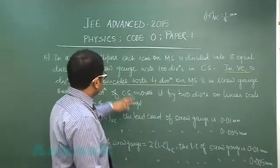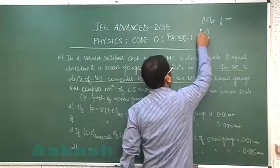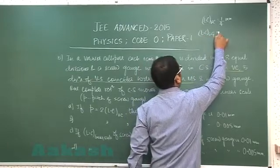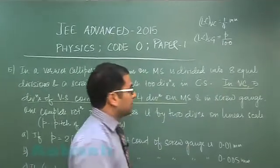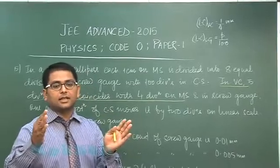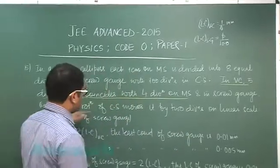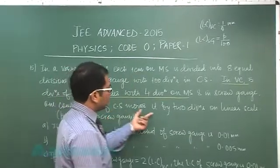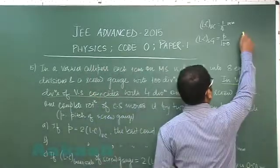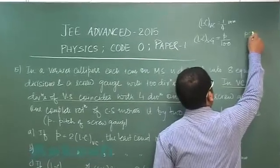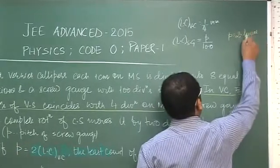In the screw gauge, there are 100 divisions in circular scale, so the least count of the screw gauge would be pitch divided by 100, where pitch is denoted by p and is the distance covered in one complete rotation. But there are some extra facts as well. In the screw gauge, one complete rotation of circular scale moves it by two divisions on linear scale. So additionally, pitch is twice the linear scale division.